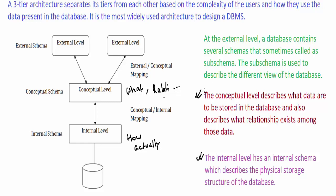Finally, coming to the external or view level — the abstraction provided here hides the entire database from the user. It includes a number of external schemas or user views. At the external level, the database contains several schemas; sometimes a sub-schema is used to describe different views of the database. All these levels are interrelated.